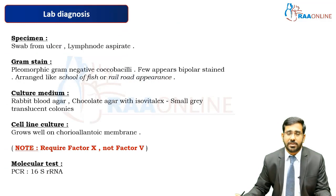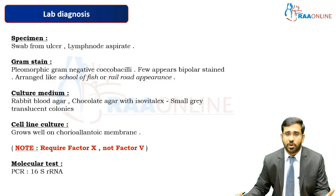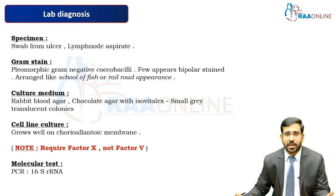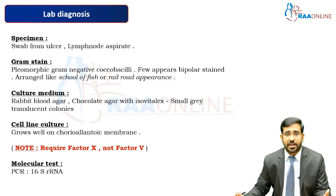For lab diagnosis, the patient presents with genital ulceration, most often a sexually transmitted infection, with a history of exposure to a commercial sex worker. We need to rule out associated serological conditions like HIV, hepatitis B, and hepatitis C. For specimen collection, we obtain a swab from the ulcer using a background swab, and if there is associated painful lymphadenopathy, we can perform fine needle aspiration cytology from the lymph node.